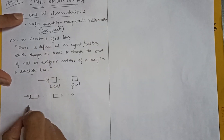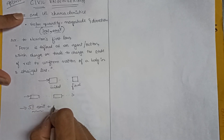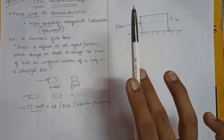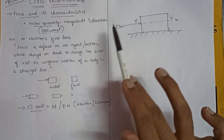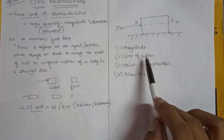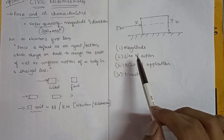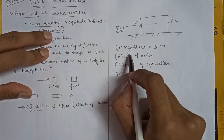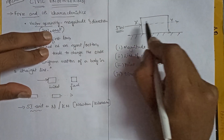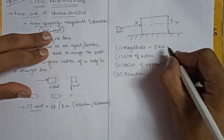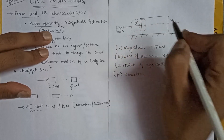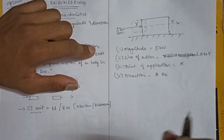The SI unit of force is Newton or kilonewton. If you consider a body at rest and apply a force of five kilonewtons, there are several characteristics: the magnitude, the line of action, point of application, and direction. The magnitude is five kilonewtons. The line of action is horizontally from X to Y, going left to right. The point of application is the point where you apply the force, and the direction is the horizontal direction.